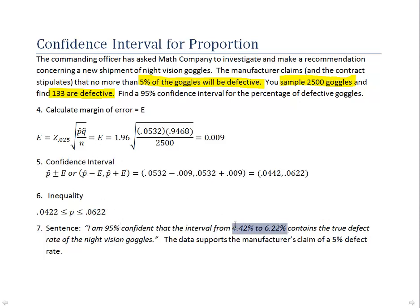But for summarizing a result, usually people would prefer to hear it as a percent. That's a more common way to express your finding. So we're 95% confident that the defect rate is between 4.4% and 6.2%. The manufacturer claimed it was 5%. Well, 5% is within the confidence interval, so we have no reason not to believe their claim.